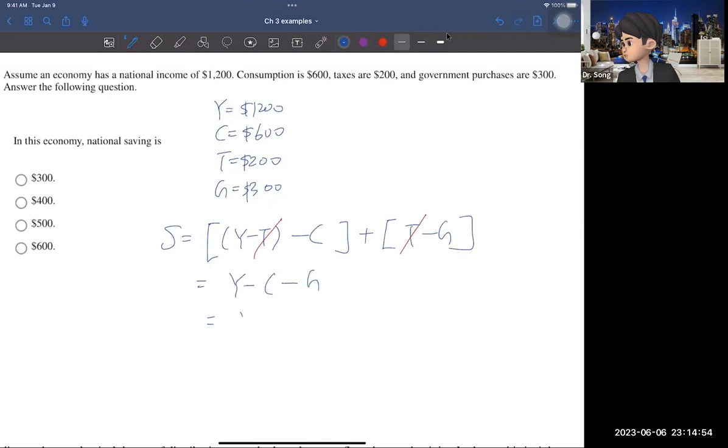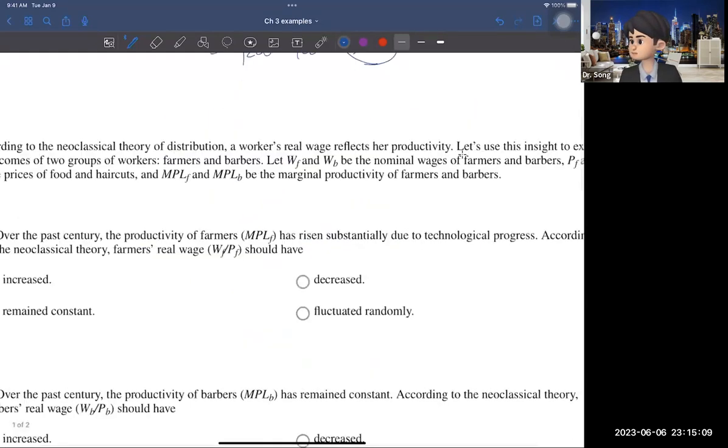So then you have Y minus C minus G. So the answer is $1,200 minus $600 minus government spending $300. Then the answer is $1,200 minus $900, which is $300. So the answer is the first one.